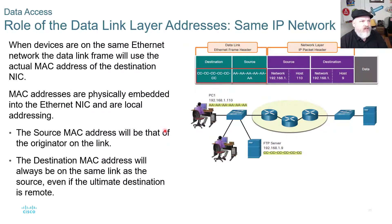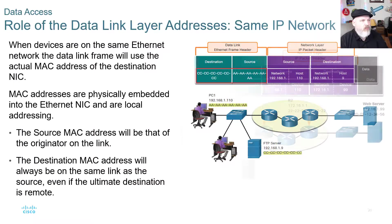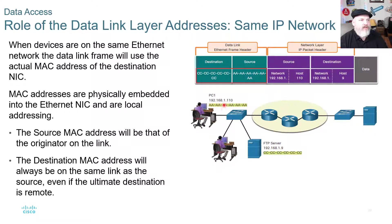The role of the data link layer addresses: when devices are on the same Ethernet network, the data link frame will use the actual MAC address — machine address code — of the destination NIC, network interface card. MAC addresses are physically embedded into the Ethernet NIC and are local addressing. The source MAC address will be that of the originator link and is a hexadecimal code. Whoever creates the network interface cards is given a unique hexadecimal code for the manufacturer and then a unique code within that manufacturer. The destination MAC will be that of where the data is being sent.